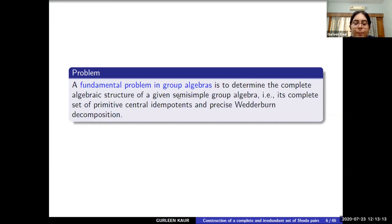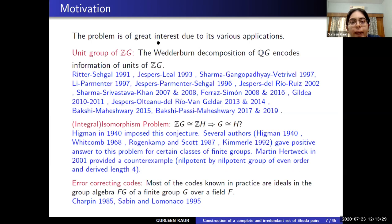So a fundamental problem in group algebra is to explicitly determine the complete algebraic structure of a given semisimple group algebra — that is, its complete set of PCIs and the precise Wedderburn decomposition. The problem is of great interest due to its links to various other problems in group rings, for example: the study of the unit group of the integral group ring ZG, the study of the integral isomorphism problem, the study of error-correcting codes, the study of the normalized problem, the study of the automorphism group of group algebras, and the study of primitive idempotents of skew group rings.